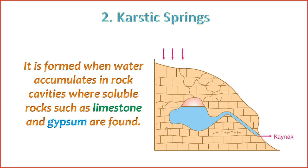8. Formation of Caves — the dissolution of soluble rocks in karst landscapes can lead to the formation of caves and caverns. Karstic springs may be associated with cave systems, and water can flow from these underground cavities to the surface. 9. Ecological Importance — karstic springs provide important habitats for unique flora and fauna adapted to the specific conditions of karst environments. The water chemistry and availability of nutrients contribute to the ecological diversity of these springs.